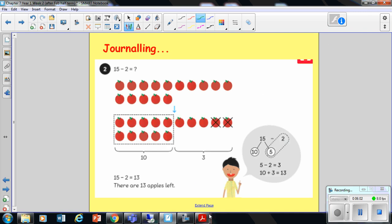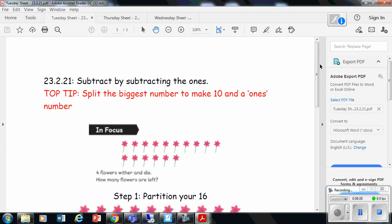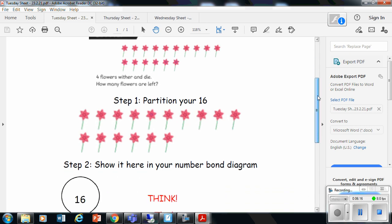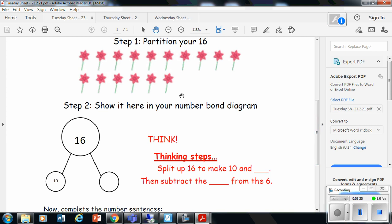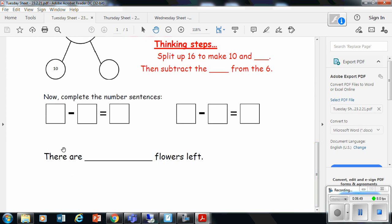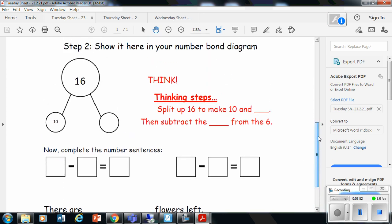Now for your journaling, what I would like you to do is look at today's sheet. Your first part is to split your 10 and your 6, so make your 16, partition it. And then your second step is to think, show it in your number one diagrams. You've got 10 and how many left over? So you'll split up the 10 into 10 and something, which we just looked at. Then subtract the something from the 6, so taking away the answer from 6. And then the answer you're left with is you're adding it on to your 10. So when you've done that, you are finished with your journaling for today. So there are so many flowers left. Well done, everybody.